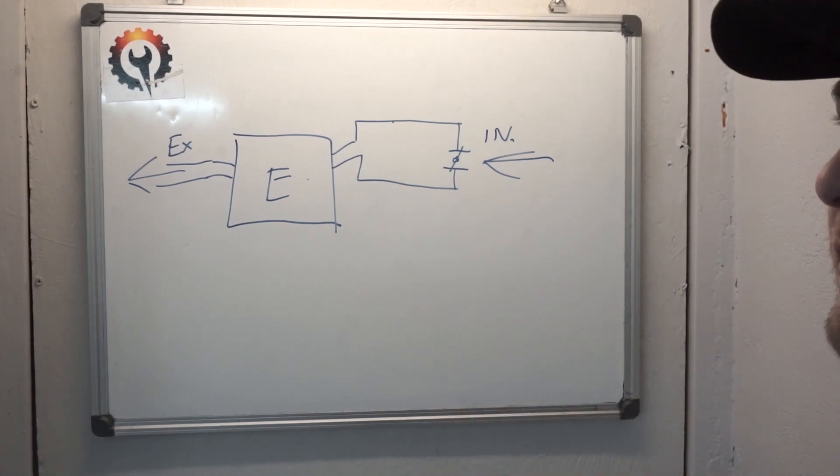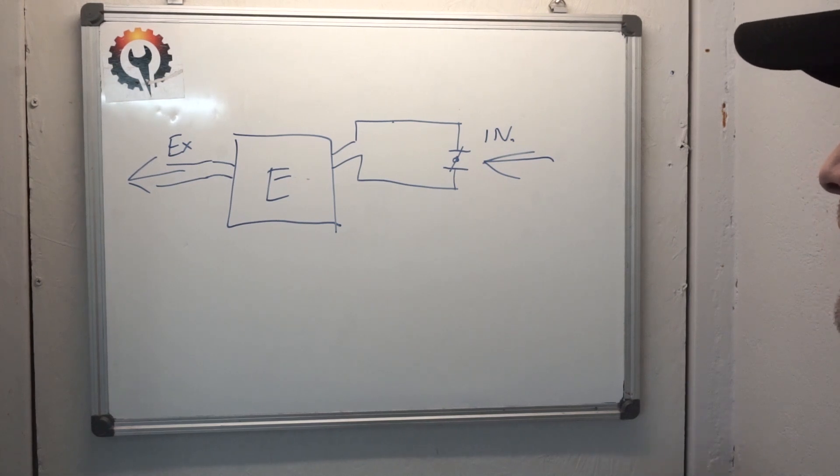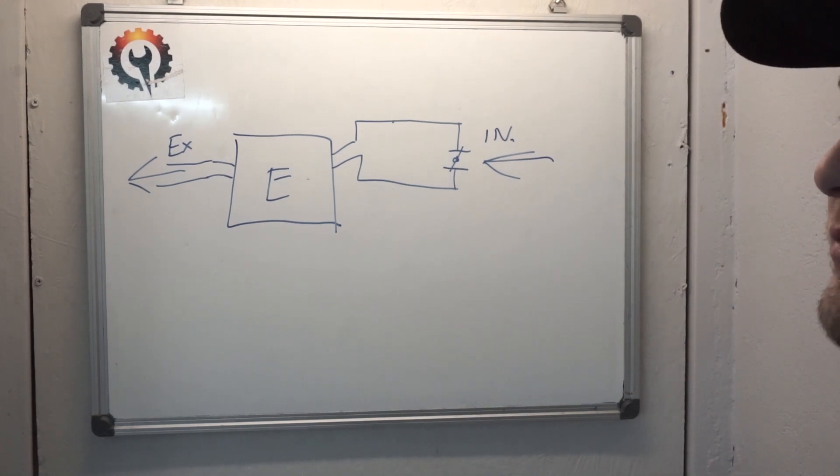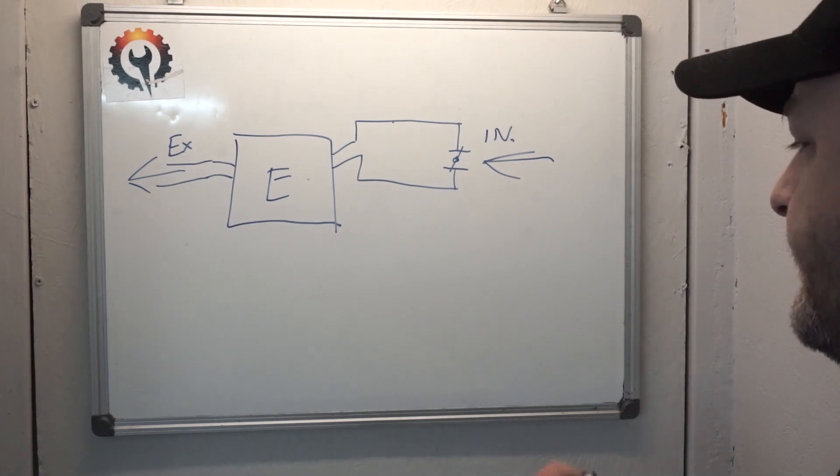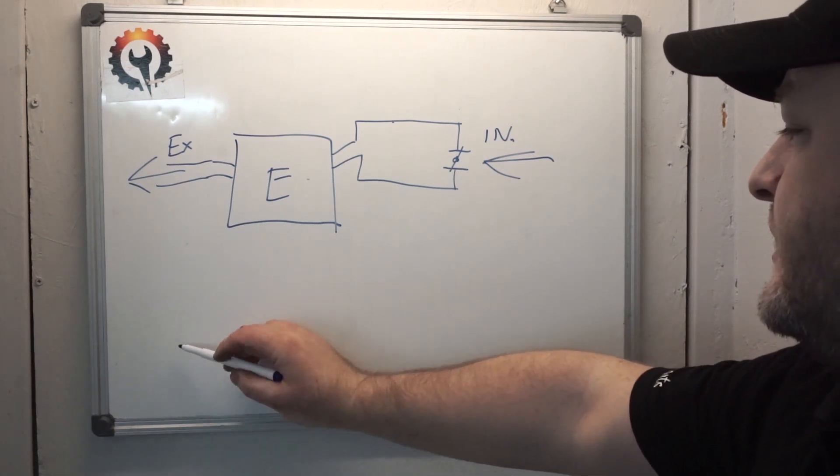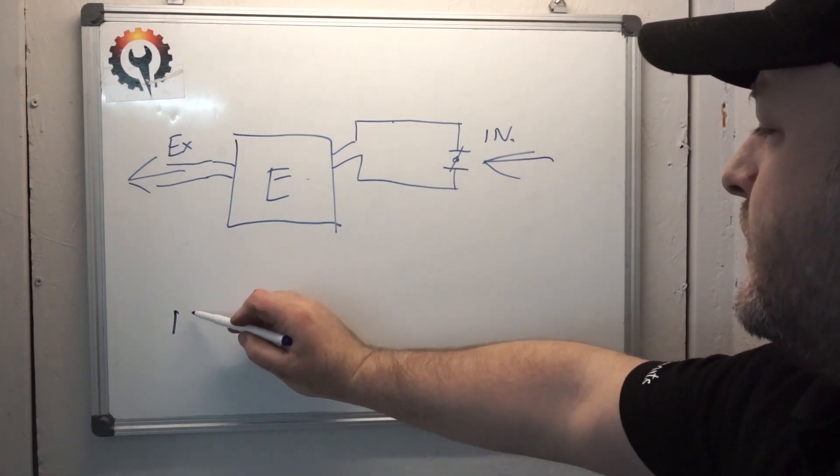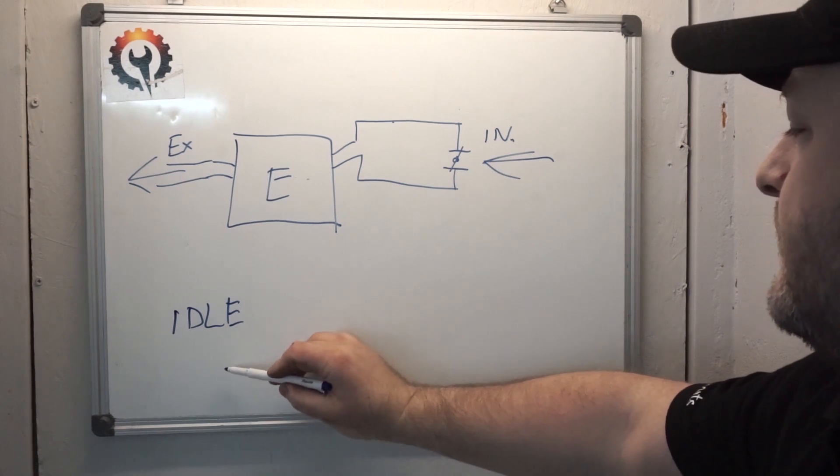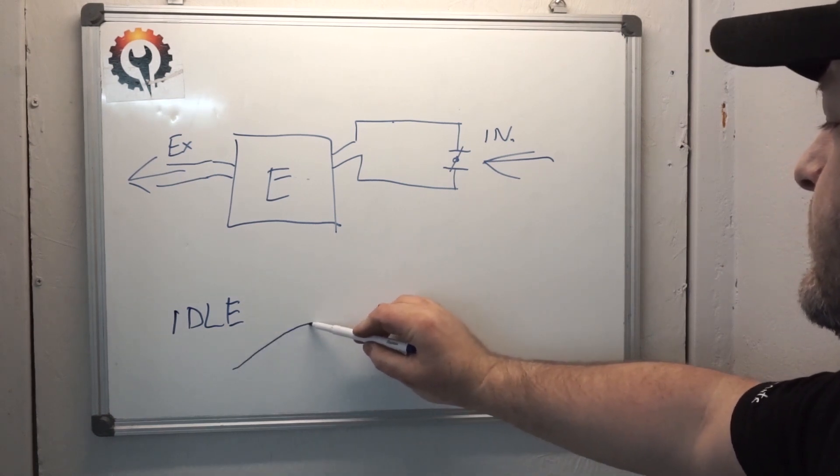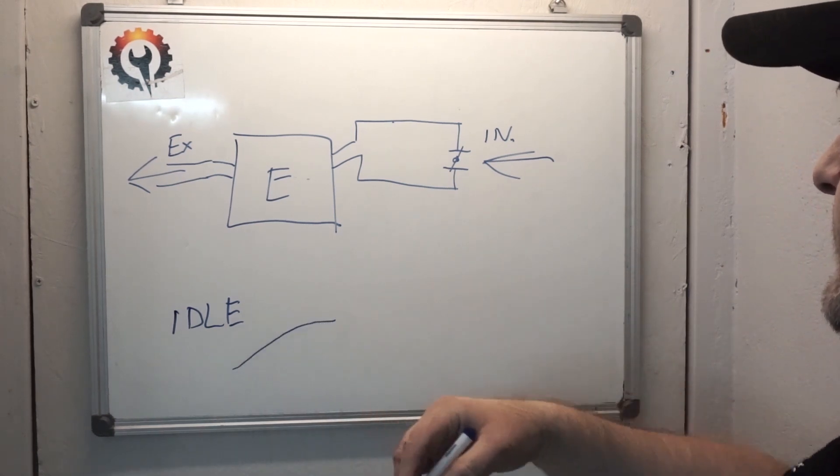The problem occurs on idle only, low RPM. On higher RPM it's okay, no problem. On low RPM, hesitation, misfiring. Only codes for misfiring. However, I did live data lookup and I see on idle fuel trims, short-term fuel trims going up. This is what I've been talking about in previous videos.